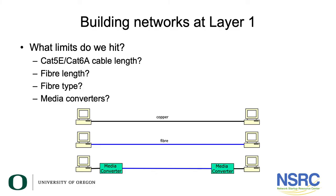Another option is media converters: you take copper Ethernet, convert it to fiber, and then convert it back to copper again at the other end. This works, but it's not an ideal way to build your network. Media converters are dumb, unmanaged devices — you've added extra active devices that could fail, but you have no way to manage or monitor them. They can't tell you what bit error rate they're seeing or what the strength of the light signals they're receiving is, so you have no way of knowing in advance when they're going to fail.